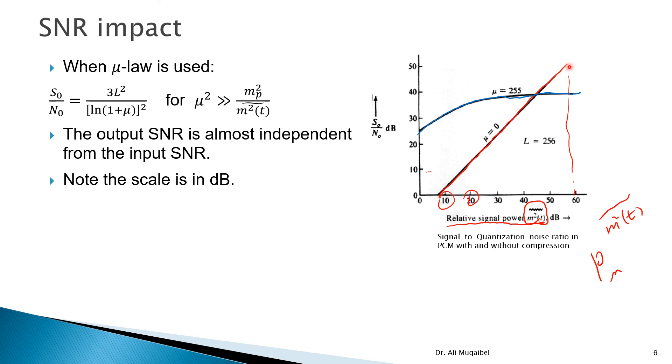So to conclude, we have penalized the high amplitude because they rarely occur, and we have improved the low voice because they frequently occur, and we almost have flattened the signal-to-noise ratio. We have made the signal-to-noise ratio almost independent of how strong your signal is. That's about quantization. If you have any question, please write in the comment section or communicate with me. Thank you very much, and we'll see you in the next lecture.